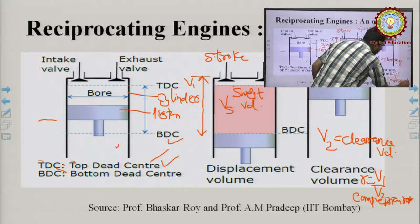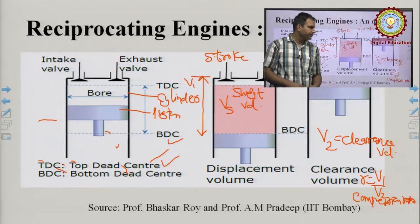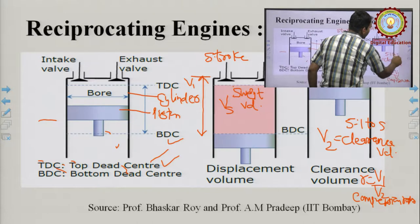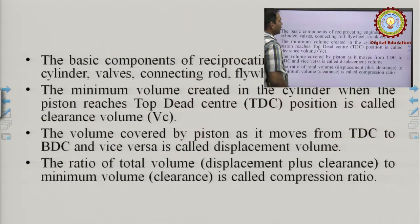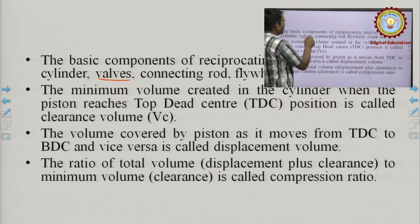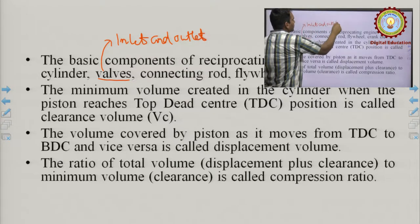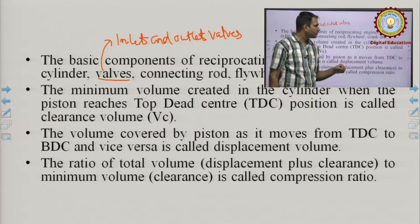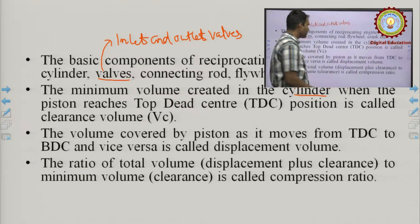The compression ratio in a petrol engine is normally 5:1 to 8:1. The basic components of a reciprocating engine are the piston, cylinder, inlet and outlet valves, connecting rod, flywheel, and crank.